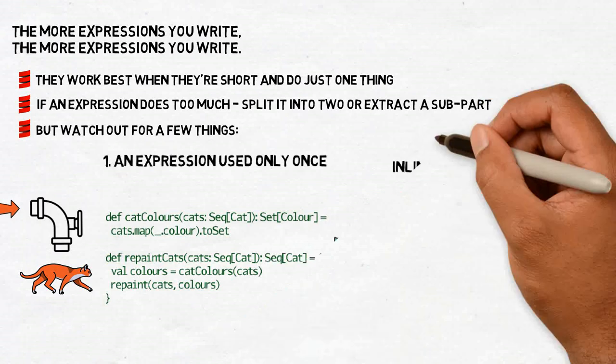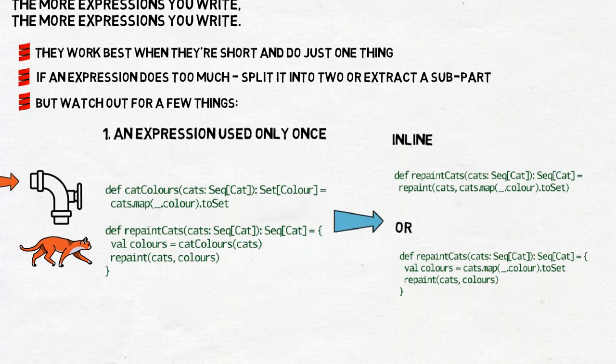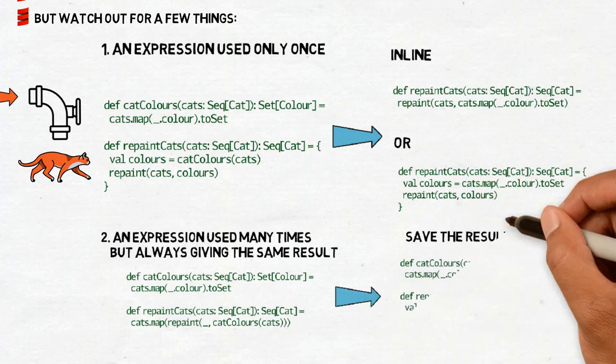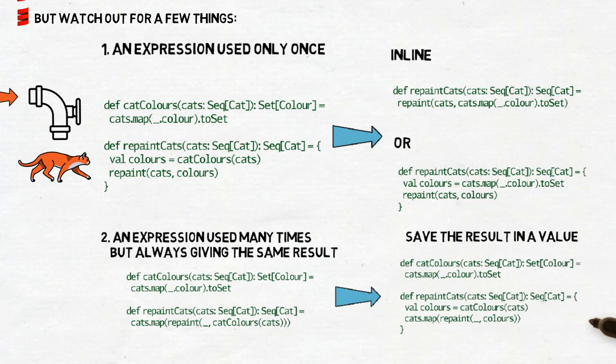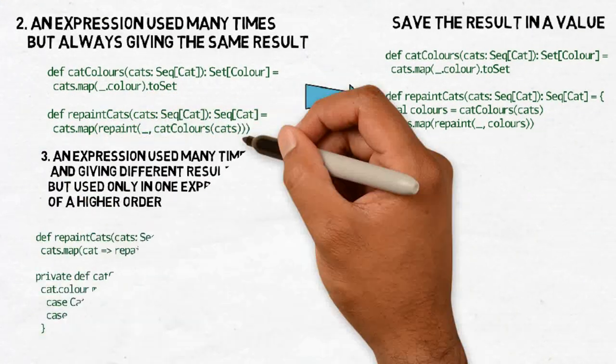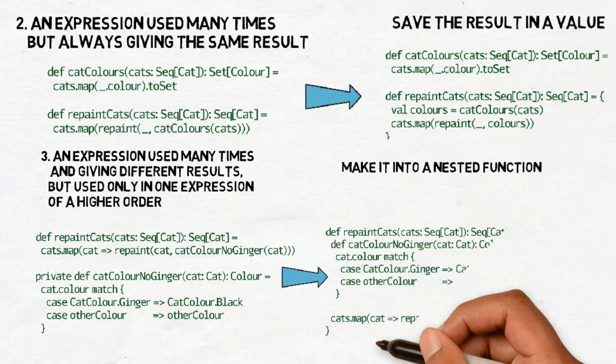First, if there is an expression you use only once, inline it or save the result in a value. Second, if there is an expression used many times but always giving the same result, then save the result in a value. Third, if there is an expression used many times and giving different results but you use it only in one expression of a higher order, then you can make it into a nested function.